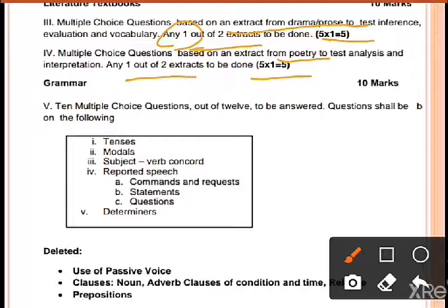Third one is the grammar section. In grammar, multiple choice questions will be asked. There will be gap filling, error detection, and similar questions. There will be 10 marks in grammar. In objective type, 12 questions will be asked. Out of those 12, we will attempt 10.